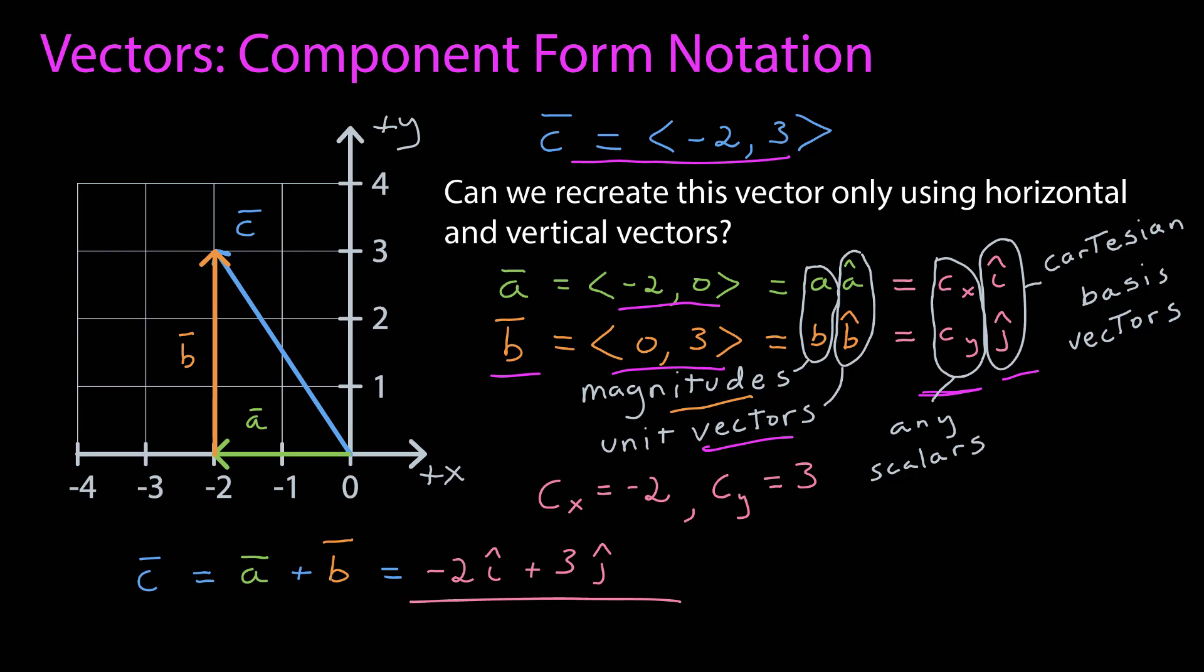To rewrite c, which is the sum of a plus b, is equal to negative 2 i-hat plus 3 j-hat. This is the component form notation and you will see this through the rest of the course and all over physics books.